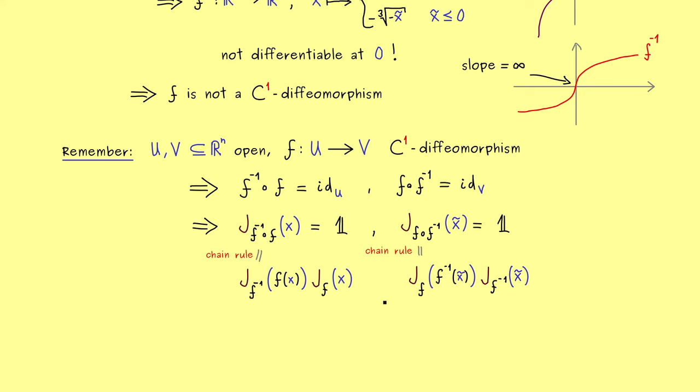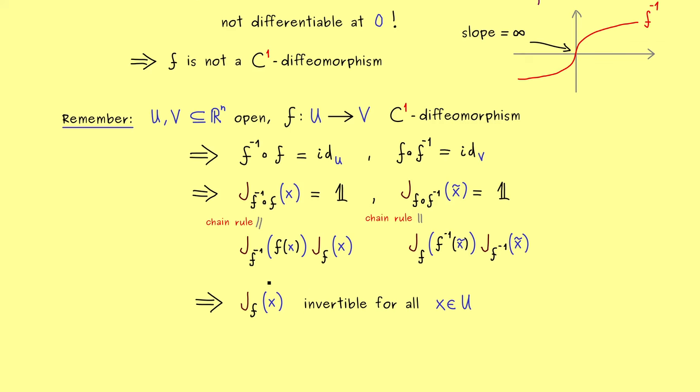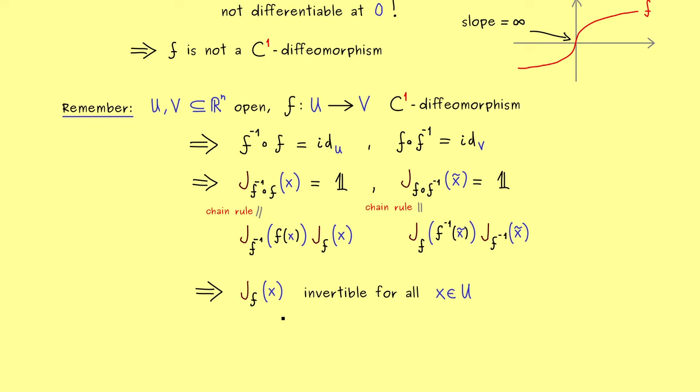Indeed, the only thing you have to do here is to choose the correct x̃ for a given x. And then our important conclusion here is that the Jacobian of f is invertible. So it is not a singular matrix, no matter which point x you put in. And you know from linear algebra that this is equivalent to the fact that the determinant of this matrix is nonzero. Hence, this is a necessary condition we have for a C^1 diffeomorphism.